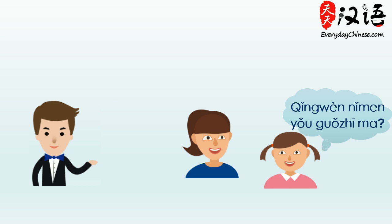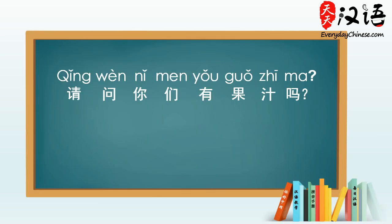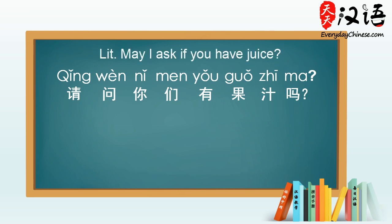请问你们有果汁吗? This sentence literally means: may I ask if you have juice? In lesson 21, we learned the verb 有 — to have — and you can replace the word juice with other nouns to ask.